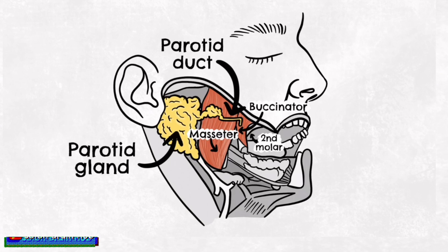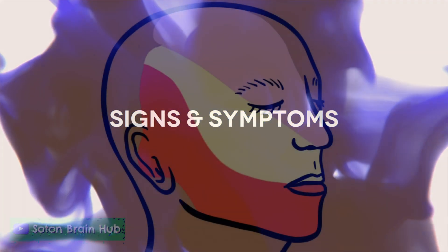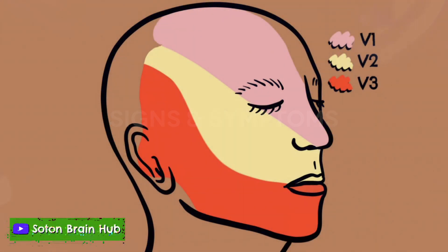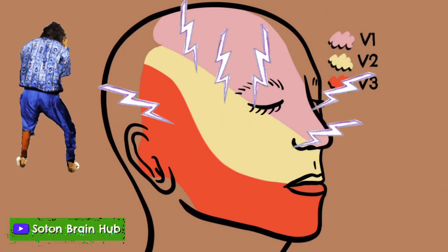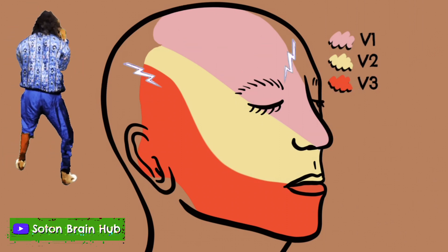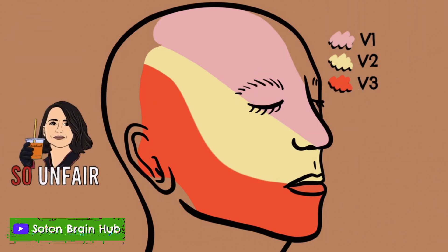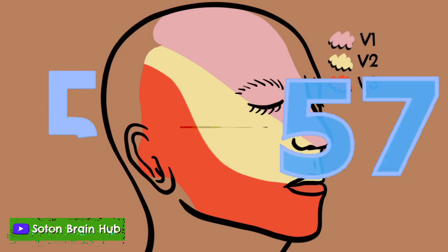Trigeminal neuralgia is one of the most common forms of facial pain. It is characterized by sudden explosive unilateral pain that is separated by pain-free intervals. 60% of cases are women and the average age of onset is 53 to 57 years.